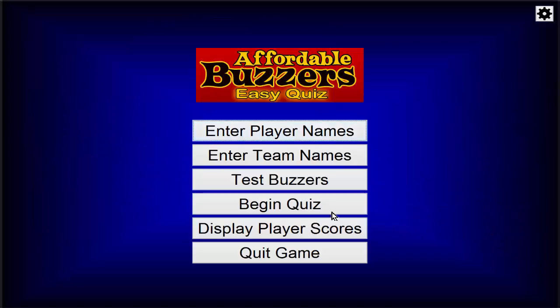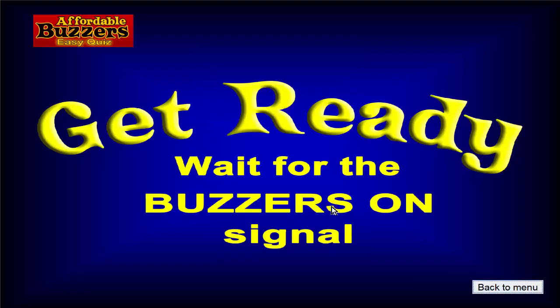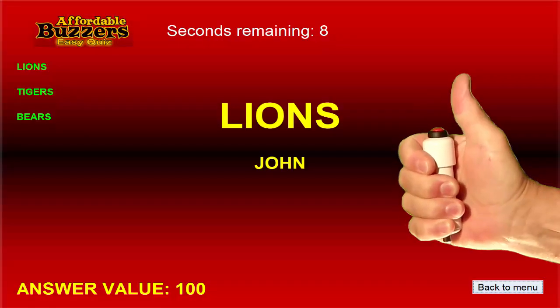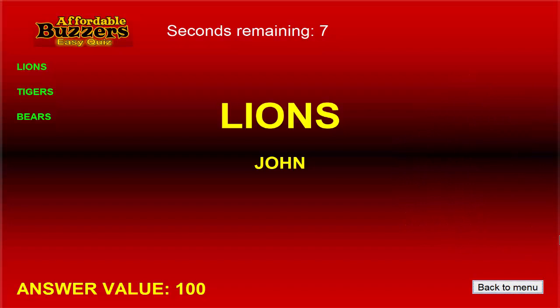Let's begin the quiz now and see how our team groups work. Here's where we read the question and press the spacebar to activate the buzzers. When John presses his buzzer first, look what happens — Team Lions displays on the screen because that's the team we assigned to John's name. John's name also appears under the team name, which we'll discuss in a minute.